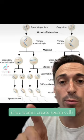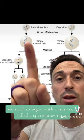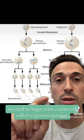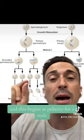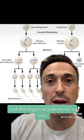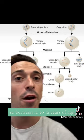If we want to create sperm cells, which we've got here, we need to begin with a stem cell called a spermatogonium. This begins at puberty for a male, so between 10 to 12 years of age.